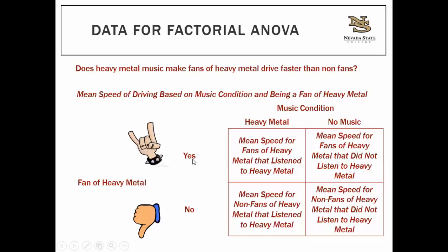The other half of heavy metal fans would be in the no music condition, driving on the same highway in the same model of car — you want to control for everything other than what you're manipulating. The non-heavy metal fans would be similarly split: half in the heavy metal condition and half in the no music condition. In all conditions, we record the dependent variable — mean speed — the same way. So we have two levels of music condition, two levels of fan status, and mean speed as our dependent variable.